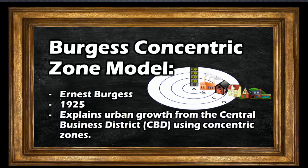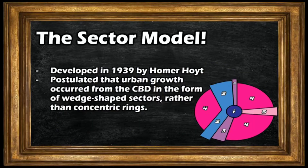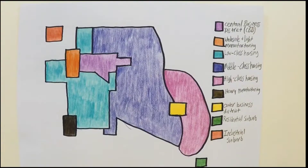We've been talking about urban models. First, we looked at the concentric zone model and then the Hoyt Sector Model. And finally, we discussed the multiple nuclei model, which brings us to the Urban Realms Model, proposed first by James Vance in 1964.